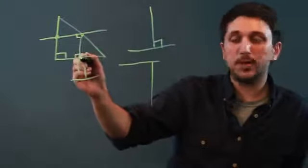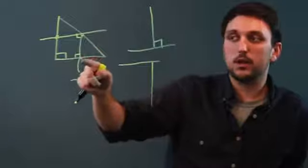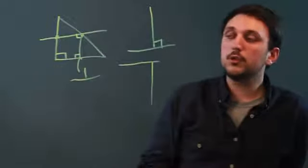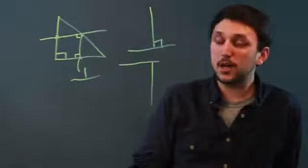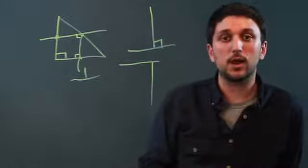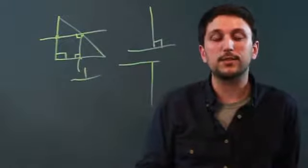Your perpendicular bisectors form three midpoints of the triangle. So you've just learned how to find a perpendicular bisector of a right triangle. I'm Charlie Kasov. Thanks a lot.